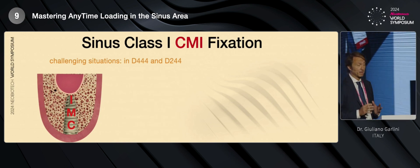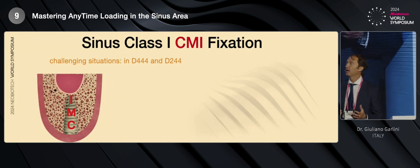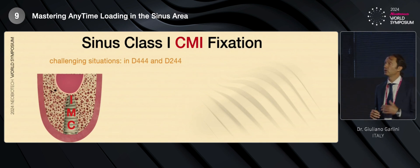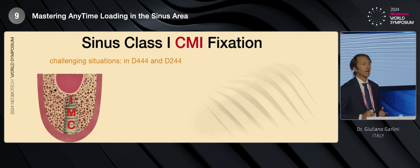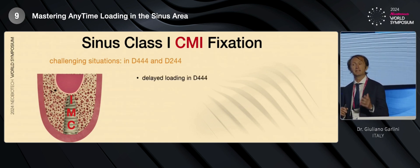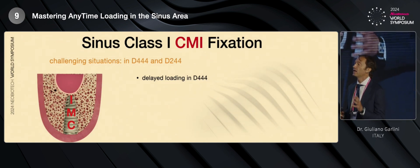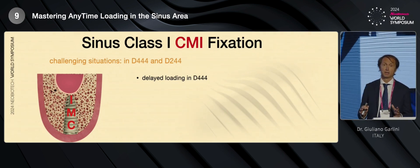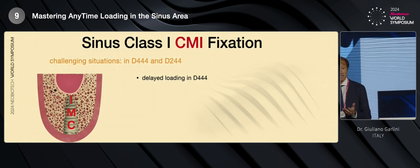Why? Because it's very common to find challenging situations in this area where we have D44 bone quality or D244 bone quality. So we must keep in mind some suggestions that we have to use in this situation. And the worst situation is when you have D44. In this situation, probably it's better to do a delayed loading, to submerge the implant and not to perform an immediate loading.